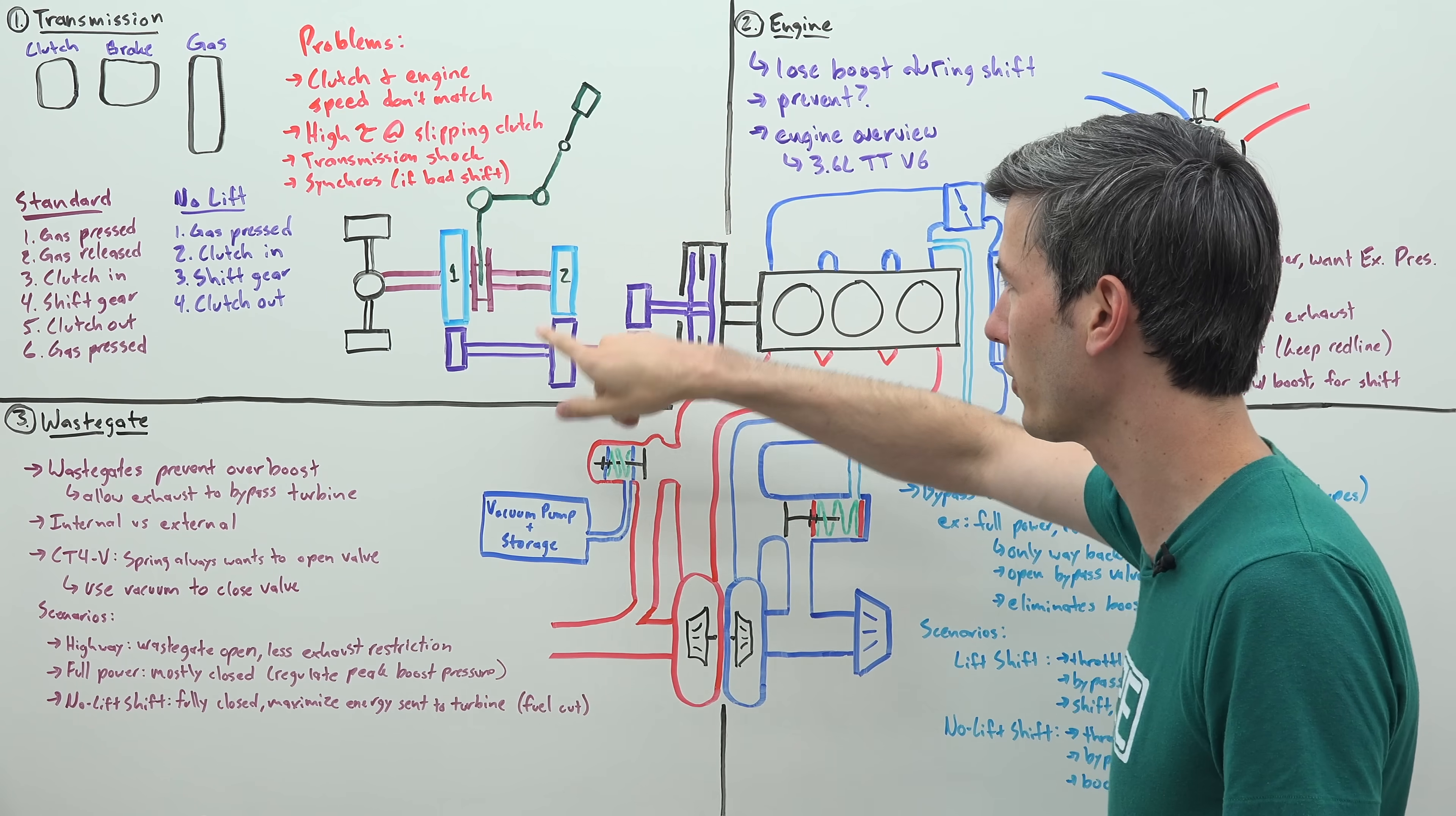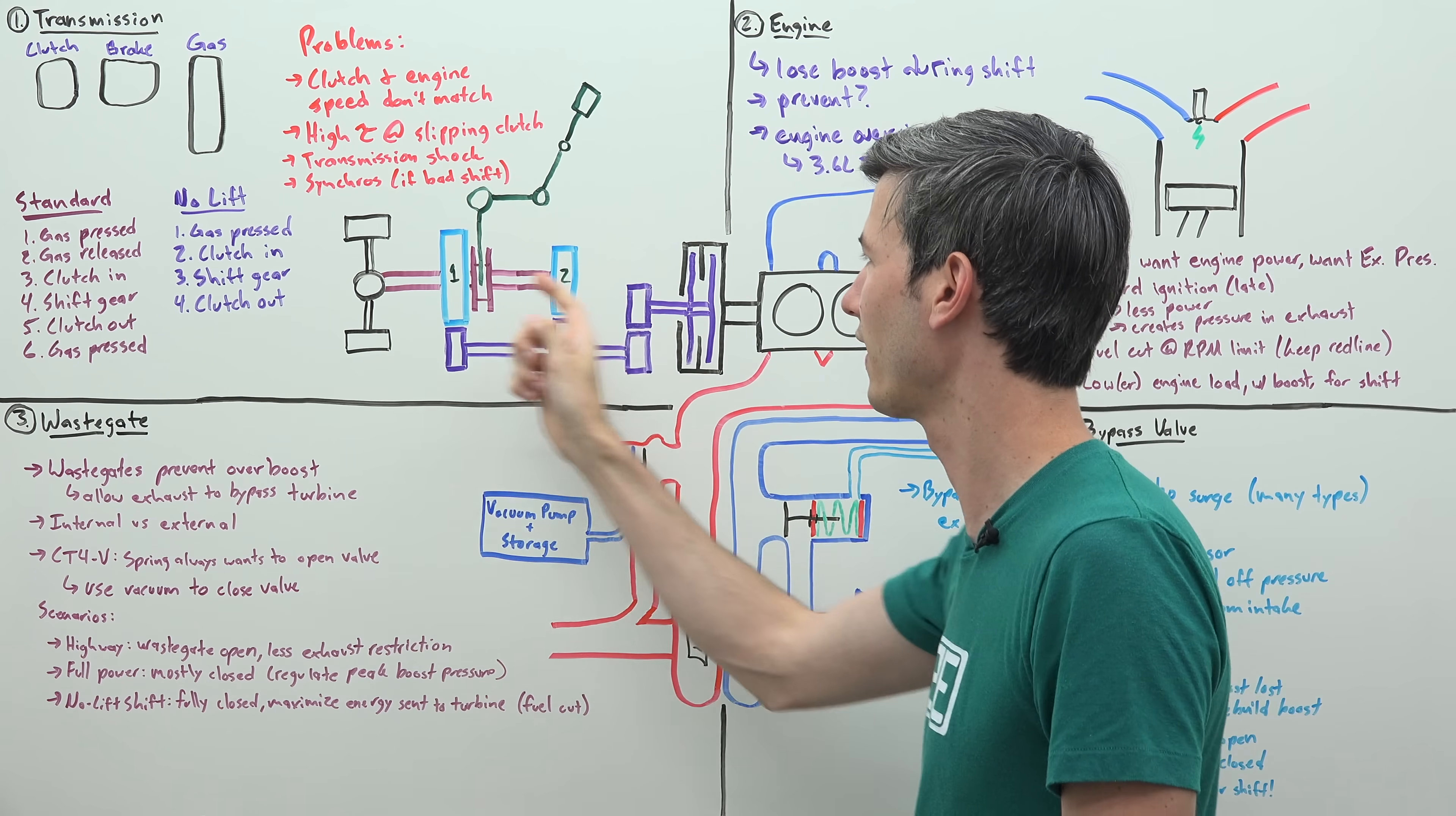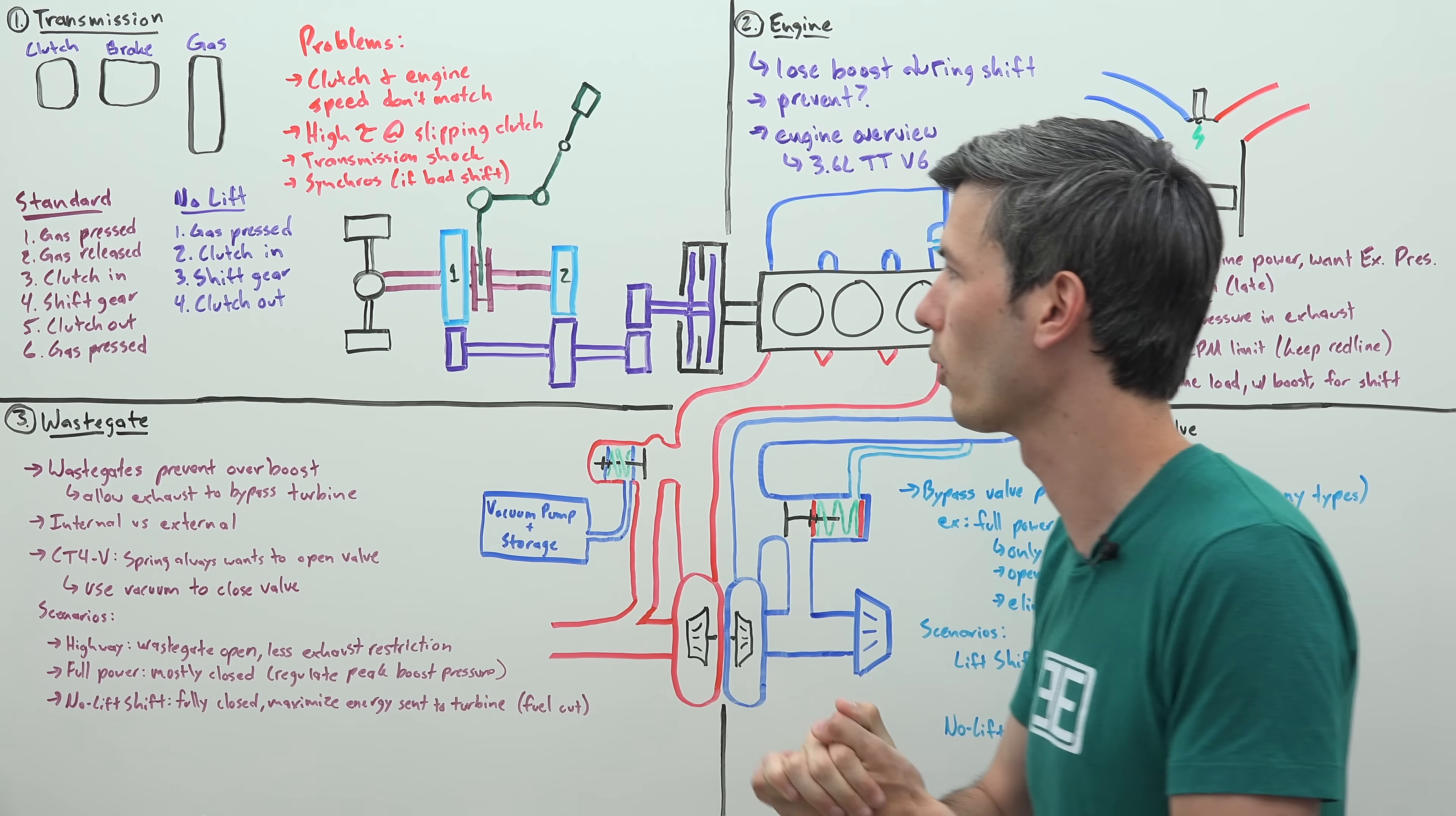That clutch then feeding the transmission. Of course you've got your manual shifter to select this collar between our two gears for this example, first and second, and then sending that power to the rear wheels.